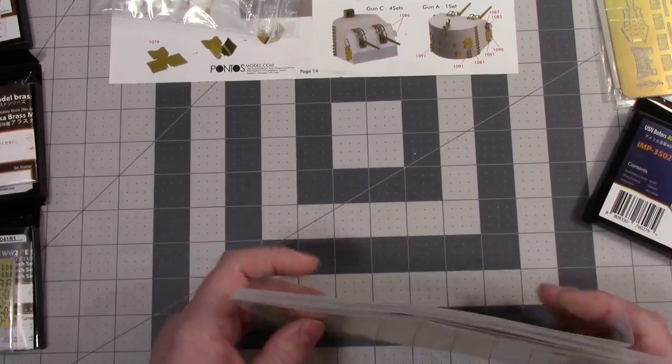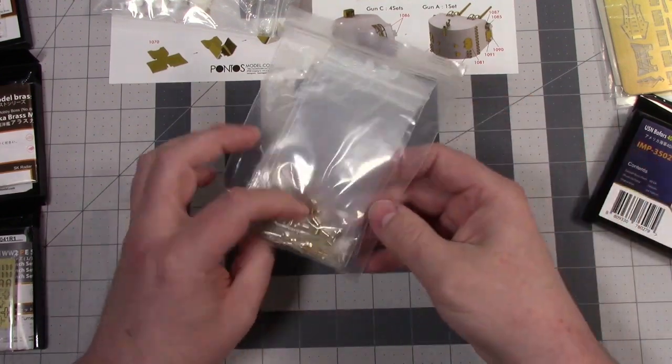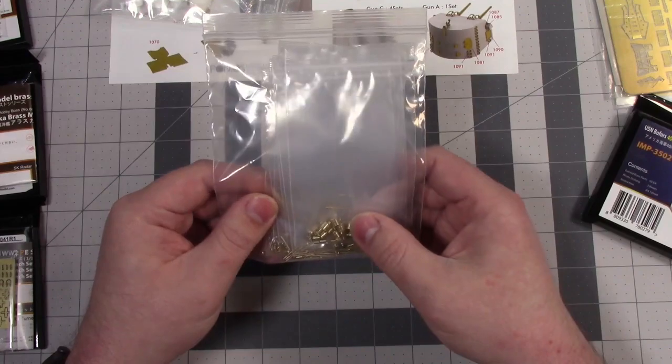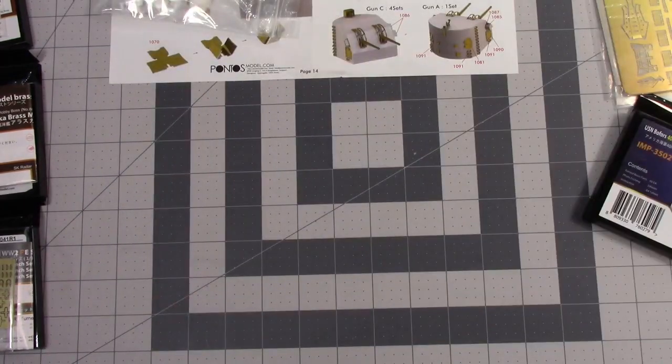And then little canister containers and stuff that could go on the deck and things like that. So that's that. And then also I have a random bag of brass pieces that I've collected. Just a random bag of brass pieces that I may need for whatever.